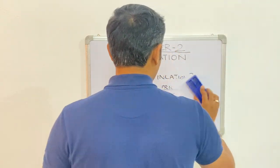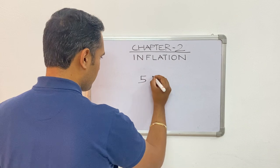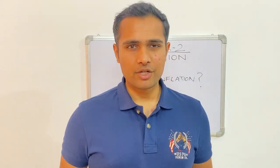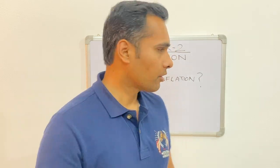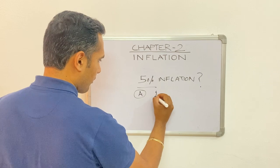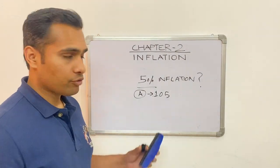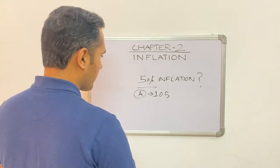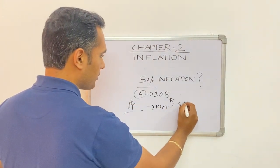Let's understand the significance of the term inflation with an example. If someone says inflation is 5%, that means the price of a good or service has increased by 5% compared to the previous year. For example, if the price of a good is 105 today, it was 100 in the previous year — that is 5% inflation.